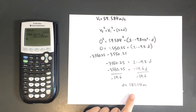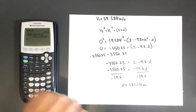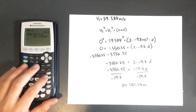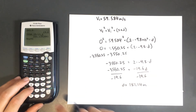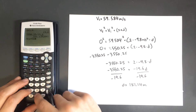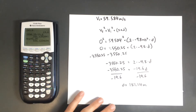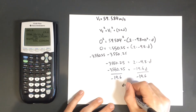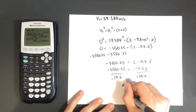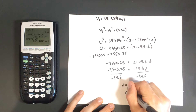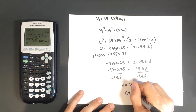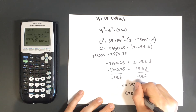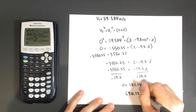So that's the height of our rocket in meters. To convert that to feet, we simply multiply by 3.28, and we find that our rocket went 594.12 feet.